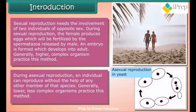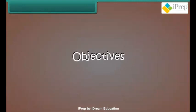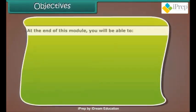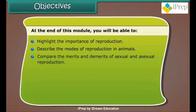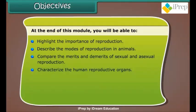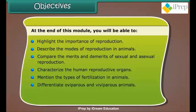During asexual reproduction, an individual can reproduce without the help of any other member of that species. Generally, lower and less complex organisms practice this method. At the end of this lesson, you will be able to highlight the importance of reproduction, describe the modes of reproduction in animals, and compare the merits and demerits of sexual and asexual reproduction.